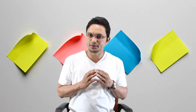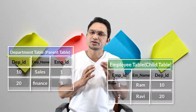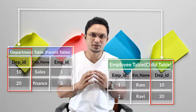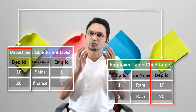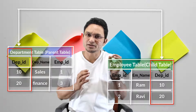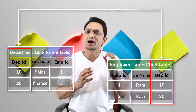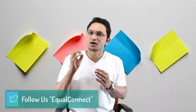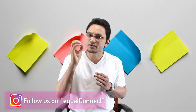To understand foreign key constraint, I'll use two tables: a parent table and a child table. We have a department table as the parent table and an employee table as the child table. Both tables have a common column: department_id. The rule is that you cannot insert a value in the department_id column of the employee table unless that value already exists in the department_id column of the department table.